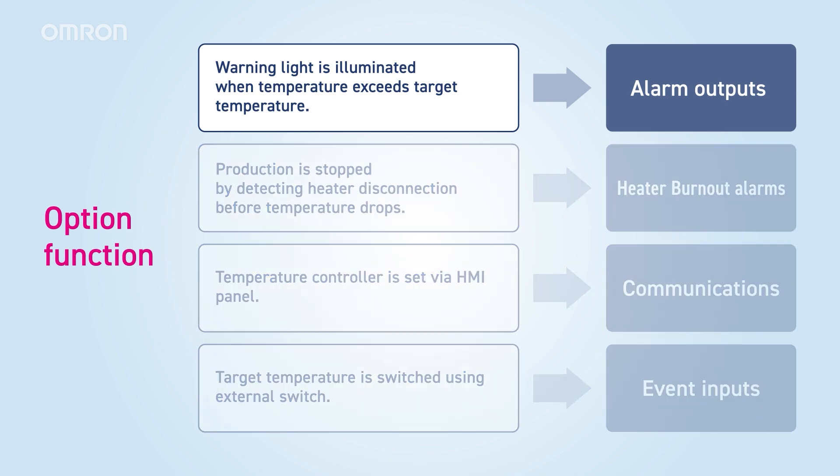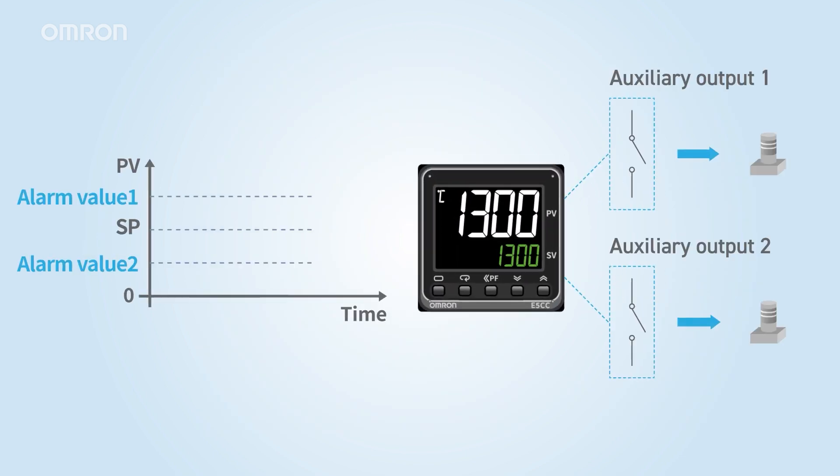First, look at the alarm outputs that detect temperature anomalies. When the current temperature deviates from the specified range, an alarm is triggered via a relay signal from the auxiliary output terminal. This signal can be used to stop the equipment or to activate a warning light.